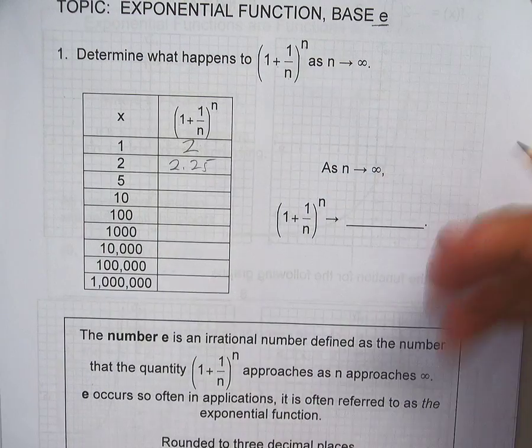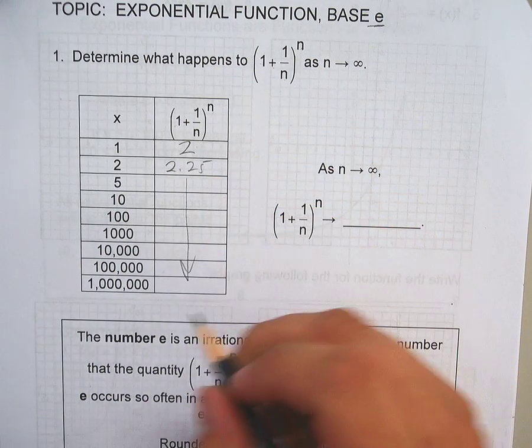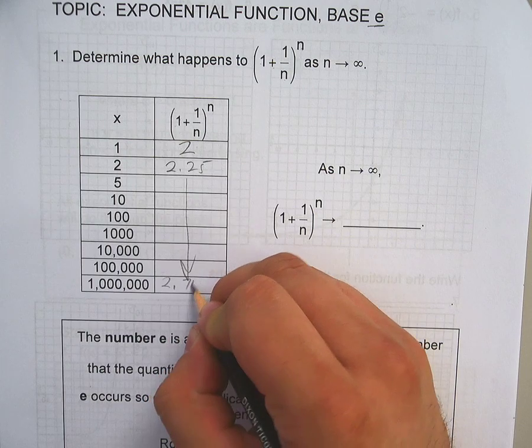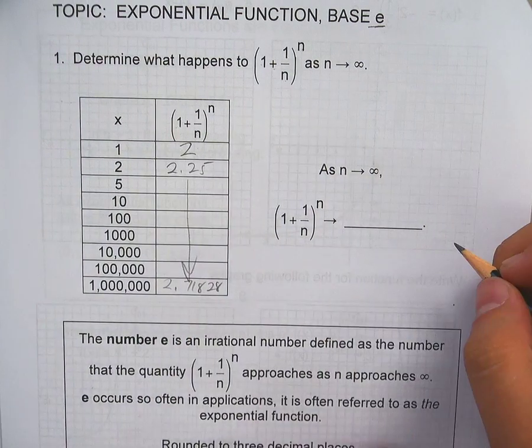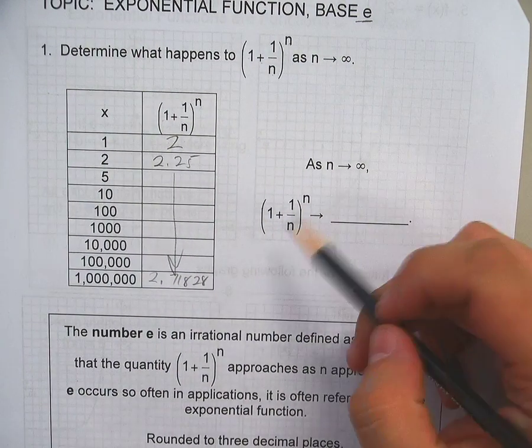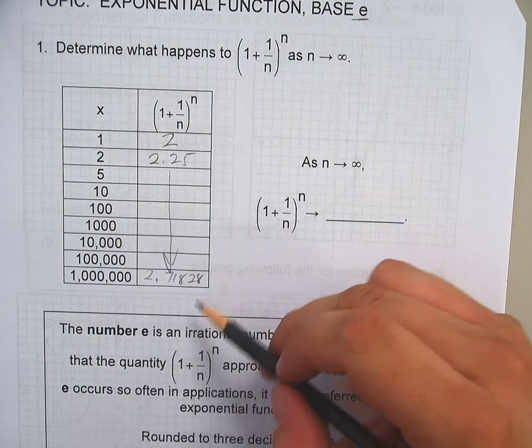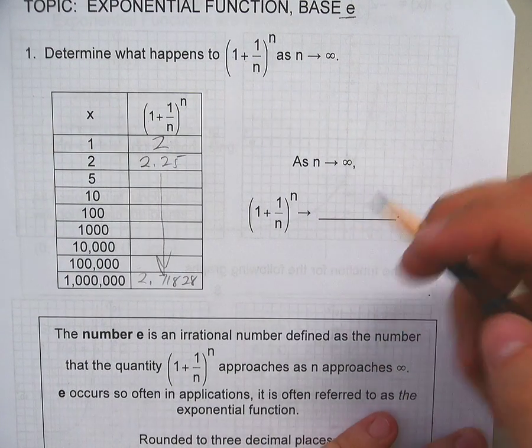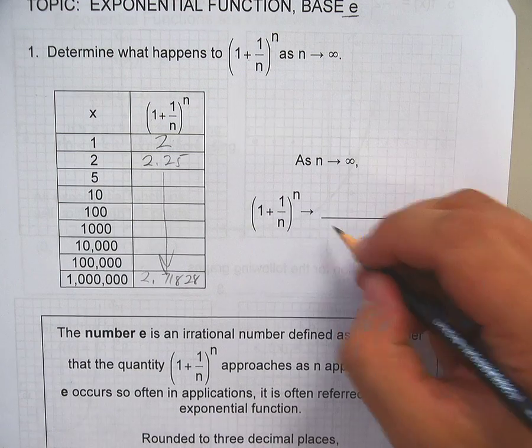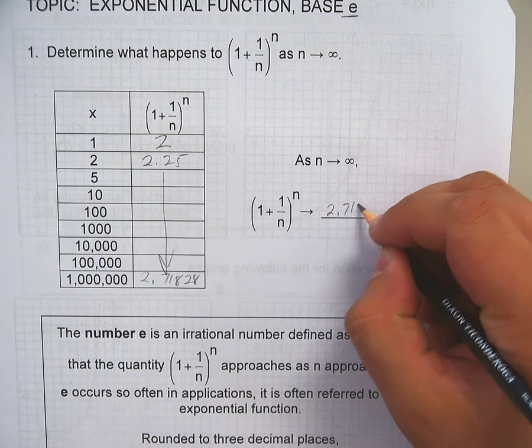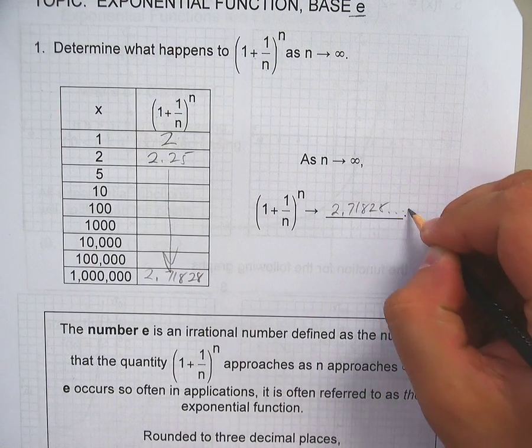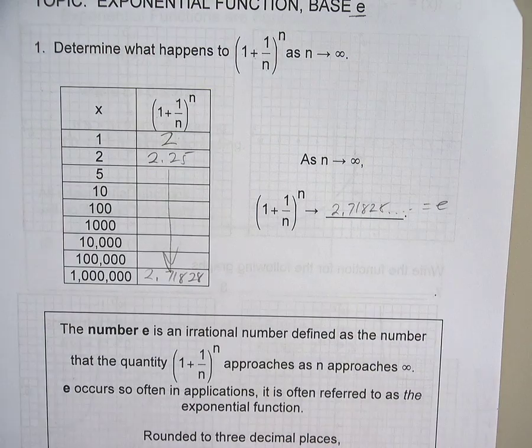And the farther down you go, lots of numbers, lots of numbers, it's 2.71828. And E happens to be that number. And if it keeps going to infinity, so as n approaches infinity, you get 2.71828 dot dot dot, which is E.